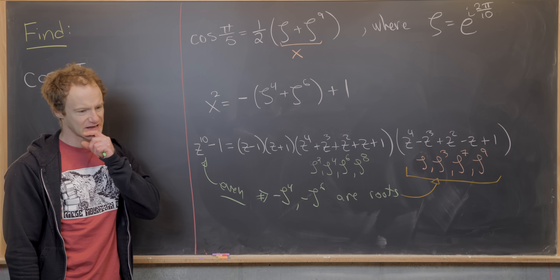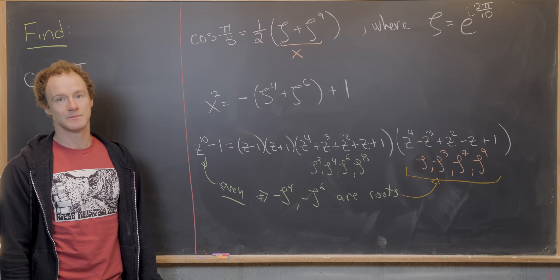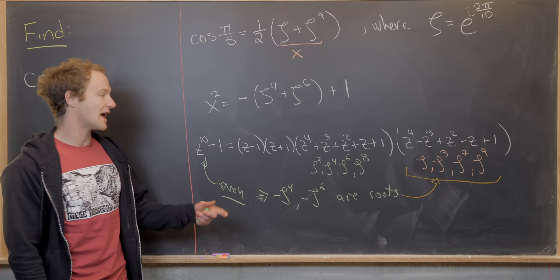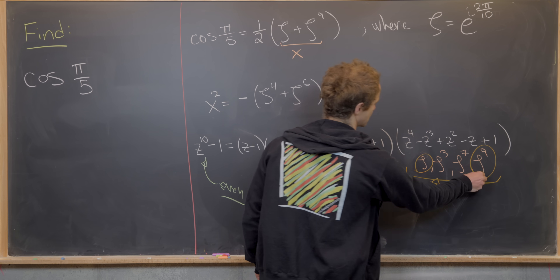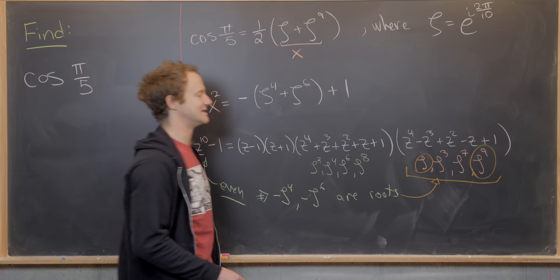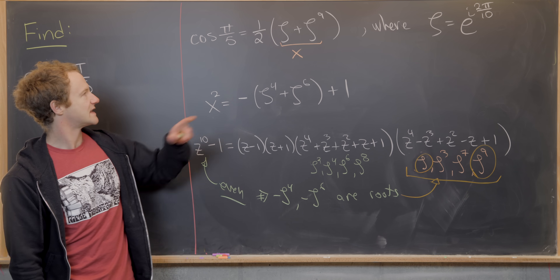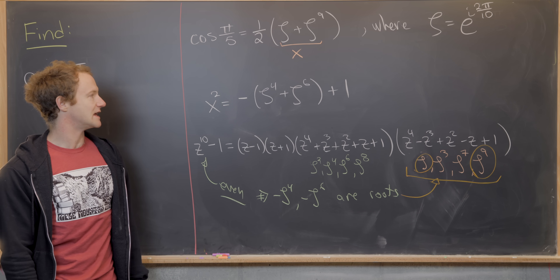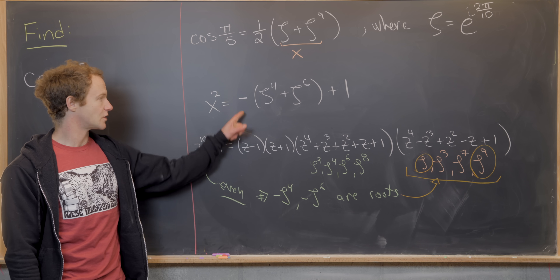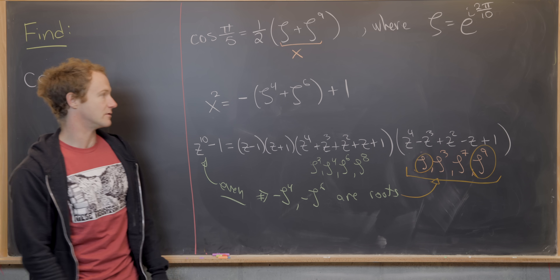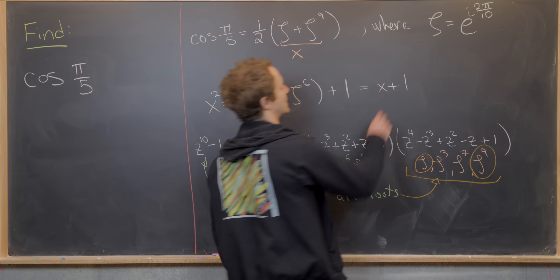By comparing which quadrants these values lie in, we can see they must correspond to ζ and ζ⁹. But ζ + ζ⁹ is exactly x. So distributing the minus sign gives us x² = x + 1.